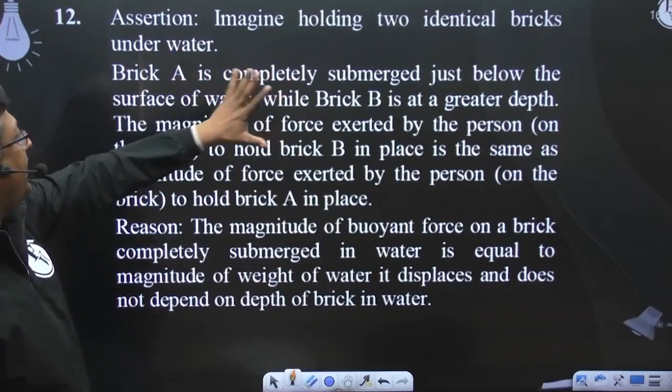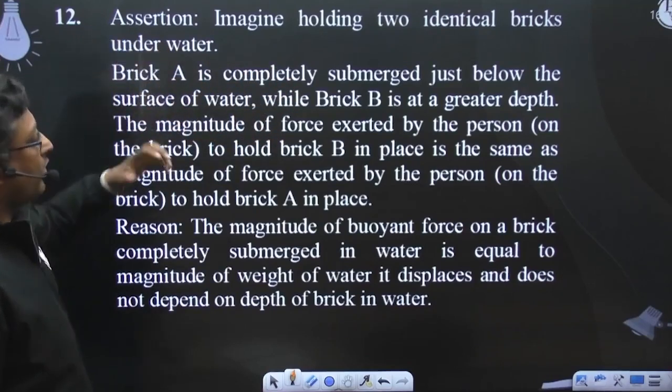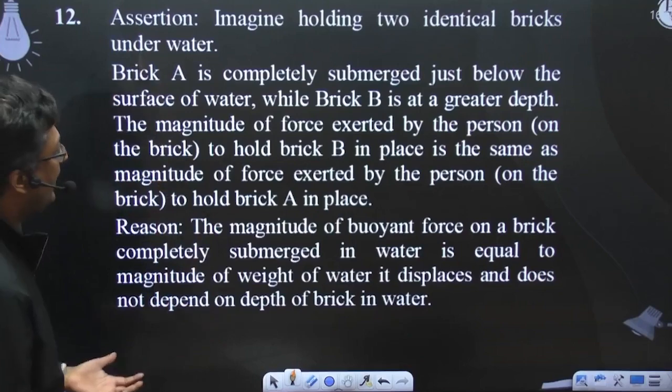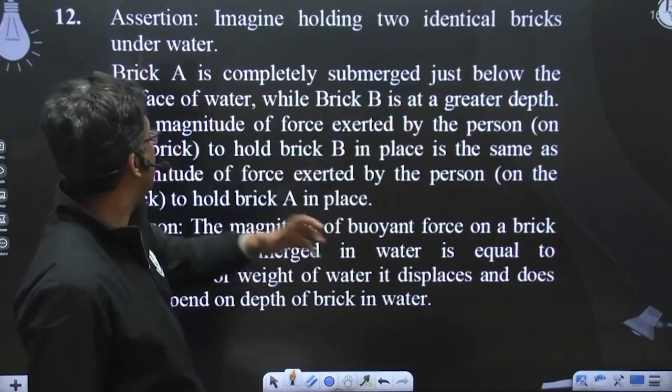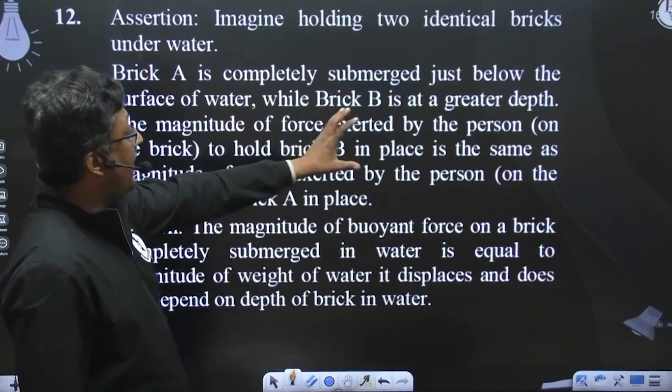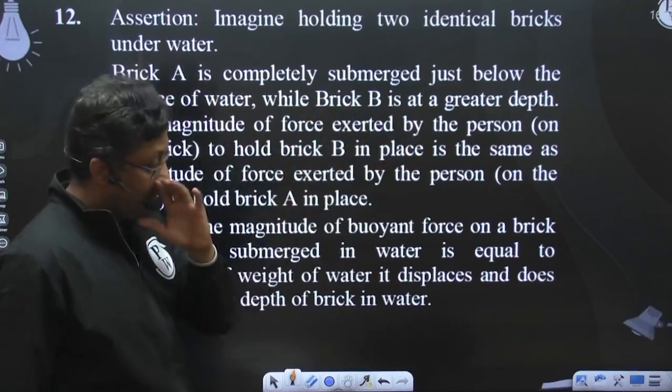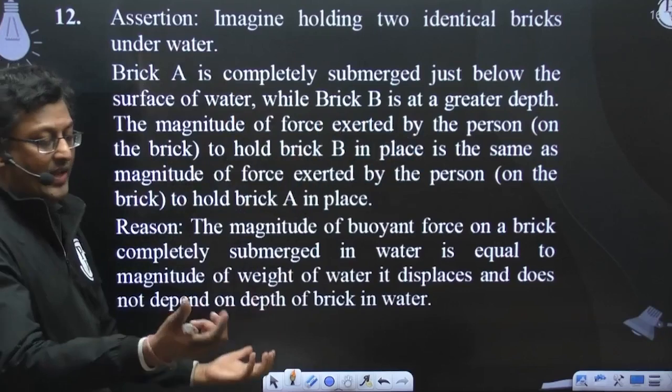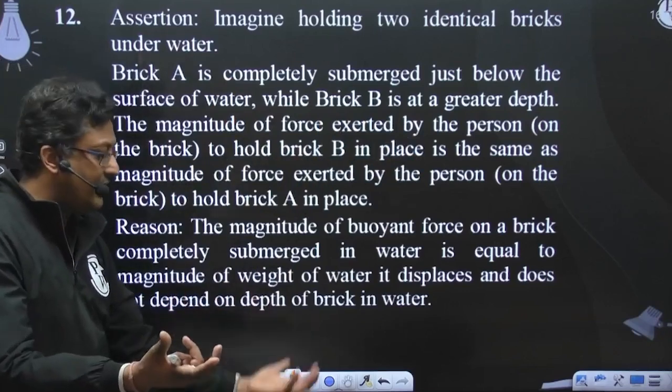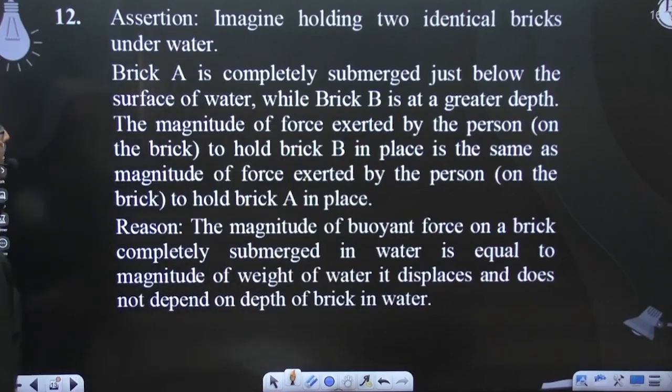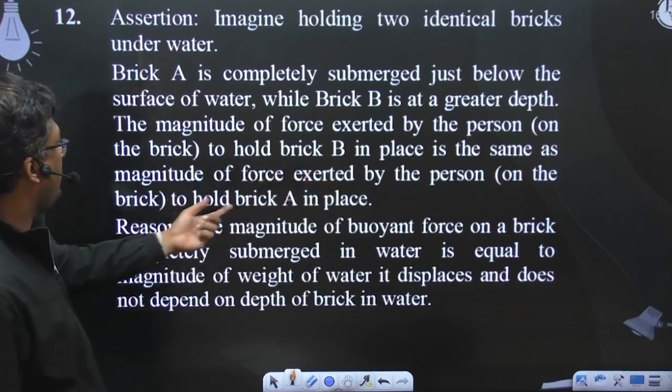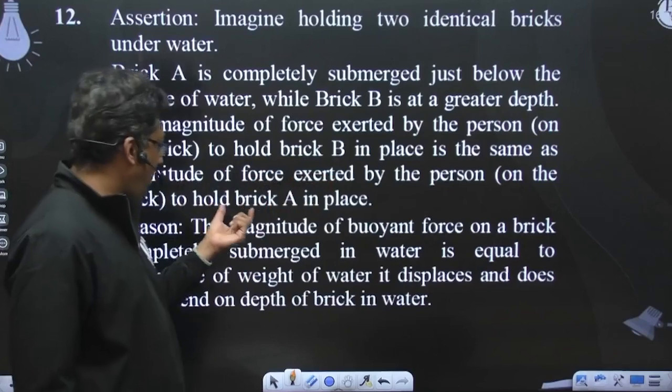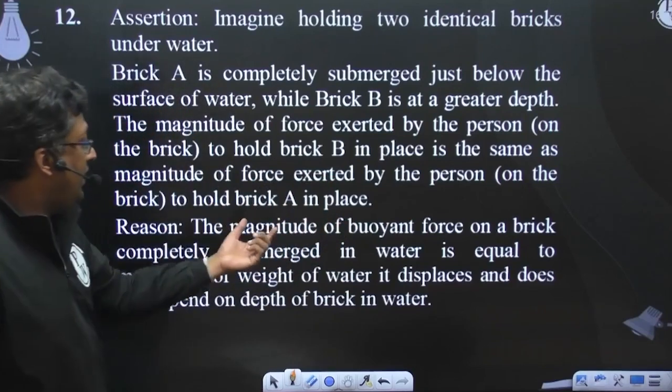Imagine holding two identical bricks underwater. Brick A is completely submerged just below the surface of water, while brick B is at a greater depth. The magnitude of force exerted by the person to hold brick B in place is the same as the magnitude of force to hold brick A in place.